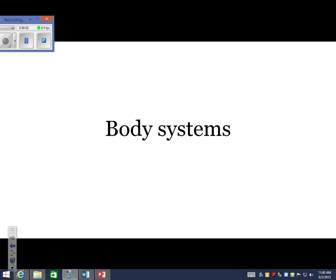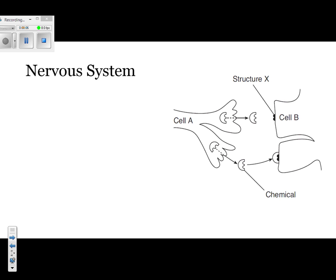Our next topic is body systems. The first body system that you should be aware of is the nervous system. The diagram to the right does a good job of explaining what's happening inside of the nervous system. Cell A and cell B are supposed to represent nerve cells, which are commonly referred to as neurons.